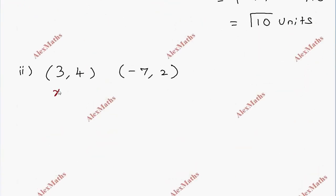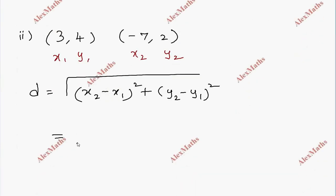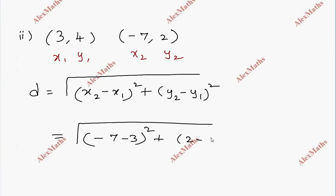So the points are labeled x1, y1, x2, y2. We apply the distance formula: distance equals the square root of (x2 minus x1) whole square plus (y2 minus y1) whole square. This gives us the square root of (-7 minus 3) whole square plus (2 minus 4) whole square.